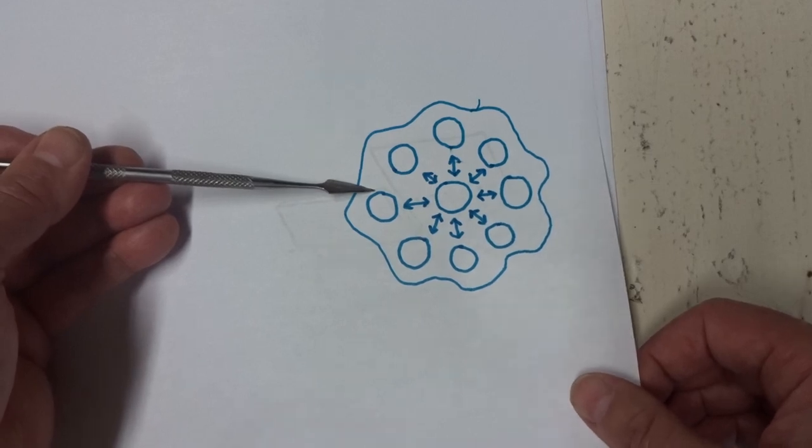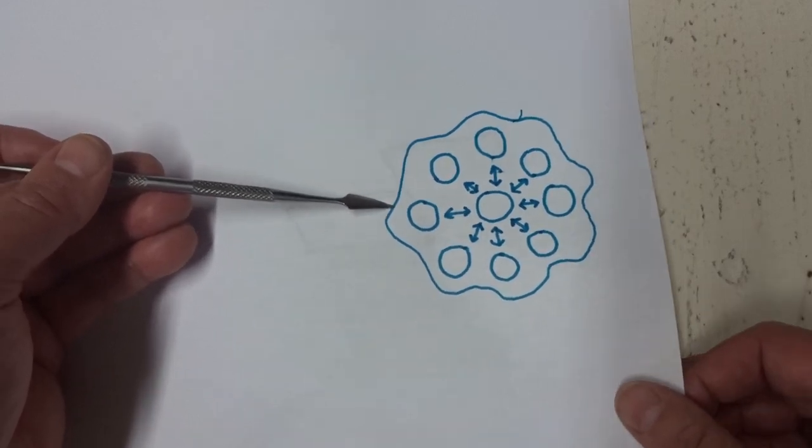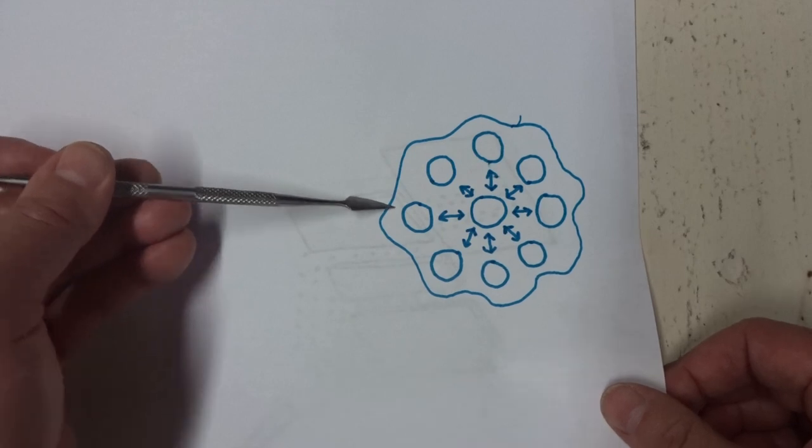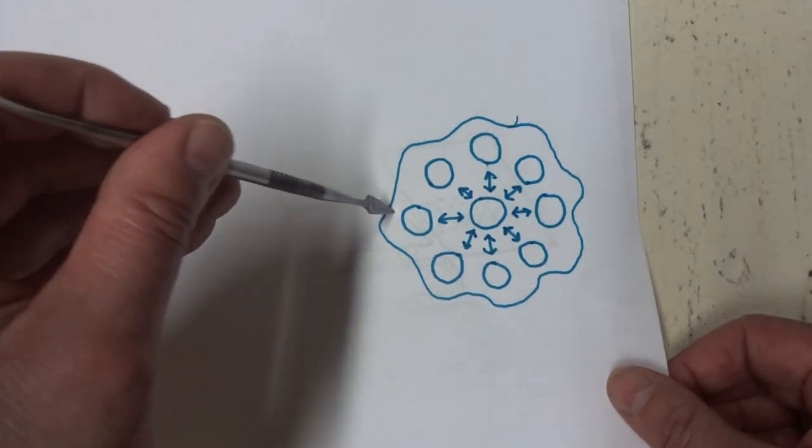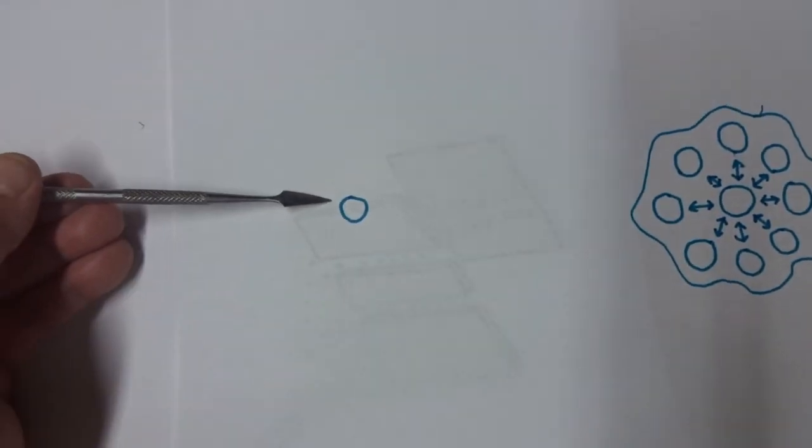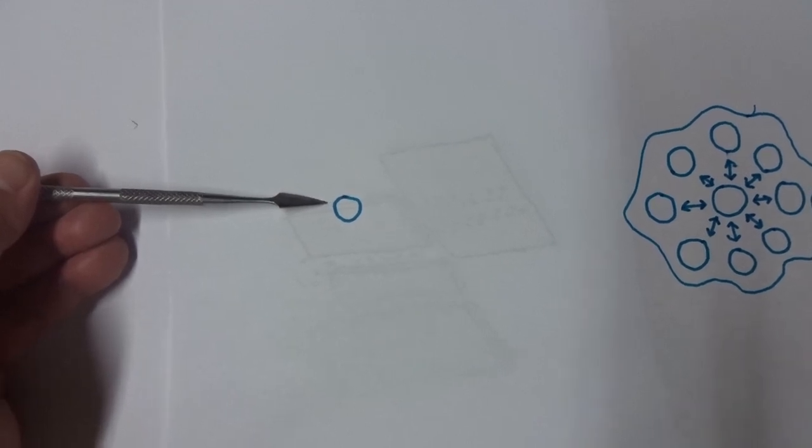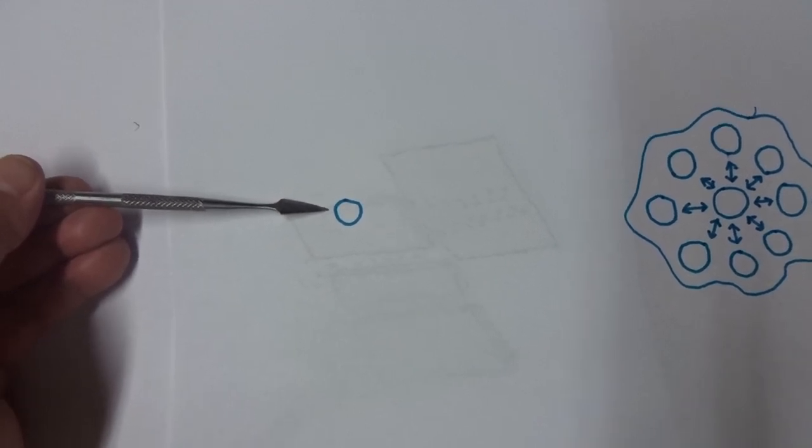However, when we measure it by experiment, we find that the superposition collapses and the electron or the photon is observed in only one location at once, at that time of being measured.